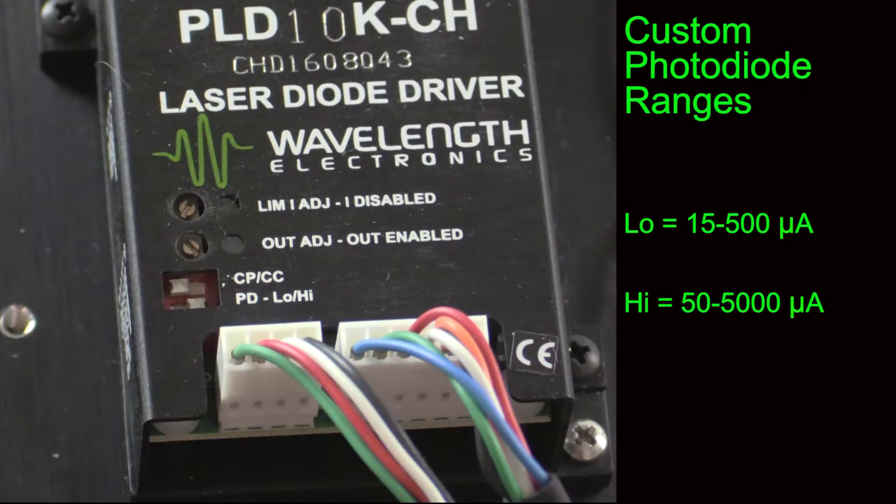Two default photodiode current ranges are switch selectable on the PLD driver. Low range works with photodiodes that produce 15 to 500 microamps of current. High range works with photodiodes that produce 50 to 5000 microamps.